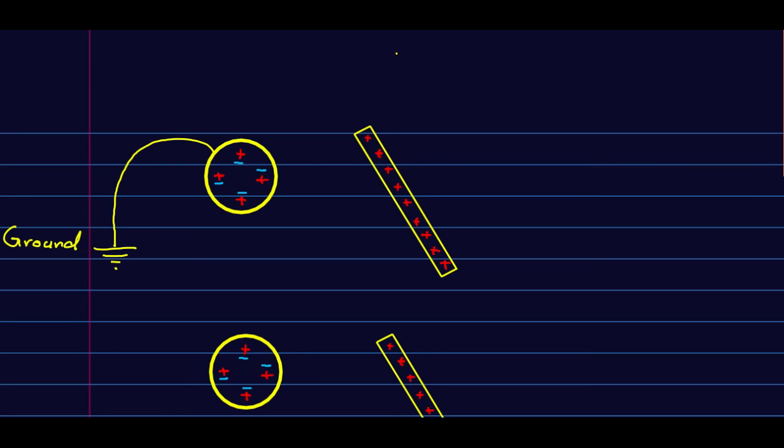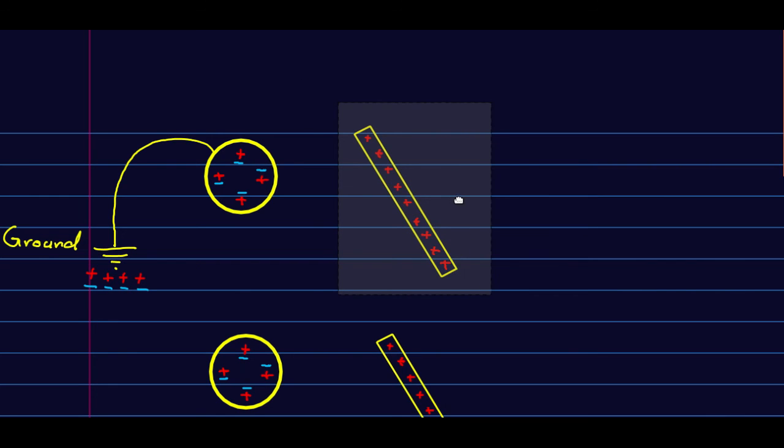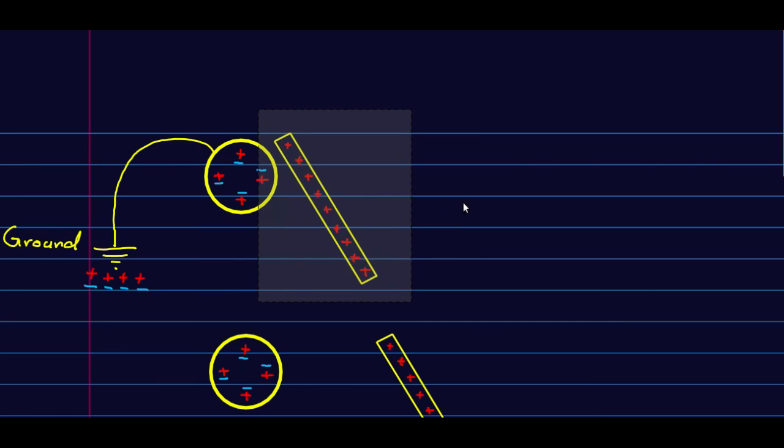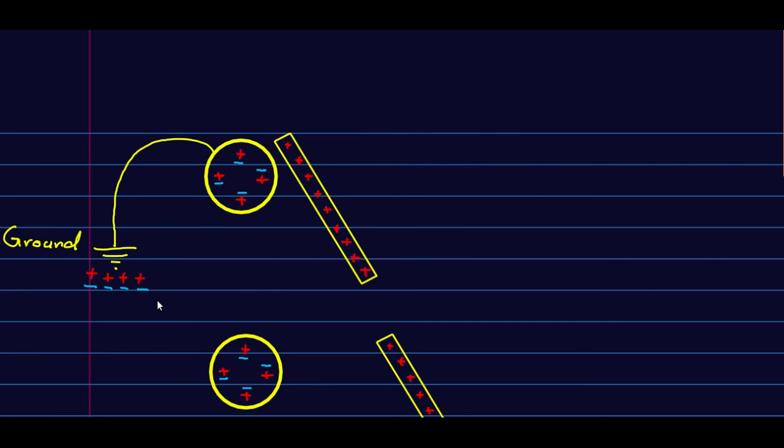And remember that what that means is that there's a large quantity of both positive and negative charge available to be shared with the ball. So, when I bring the glass rod close to the ball, what happens is that some negative charge is attracted into the ball, and the ball becomes negatively charged.